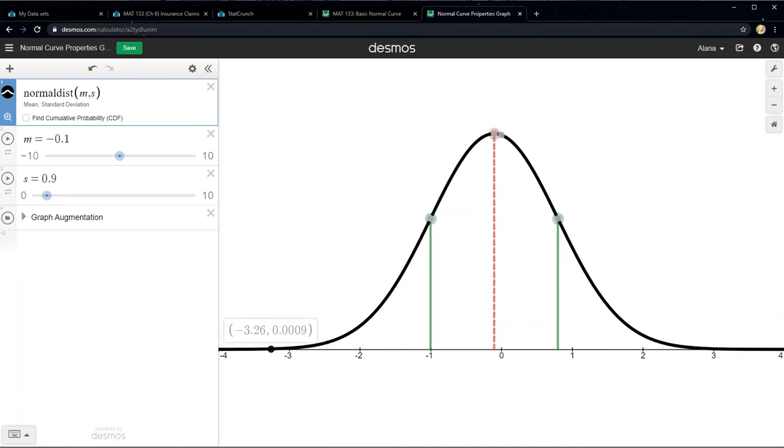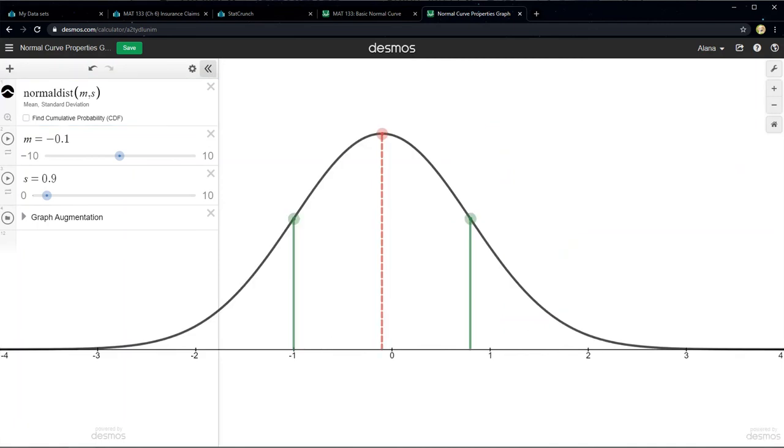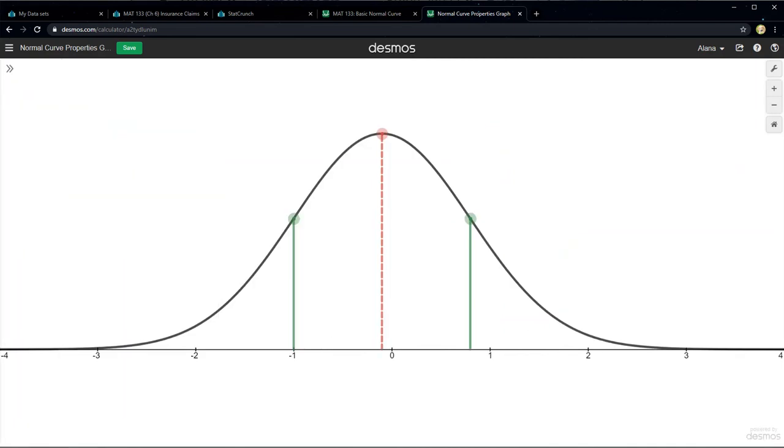So currently it's at 0.0009. It's not zero, but it's getting close, right? And the farther I go away, the closer it gets. That's what a horizontal asymptote means. It means that the curve is basically skimming along the x-axis. It never crosses the x-axis. And that's the only thing that matters to us.